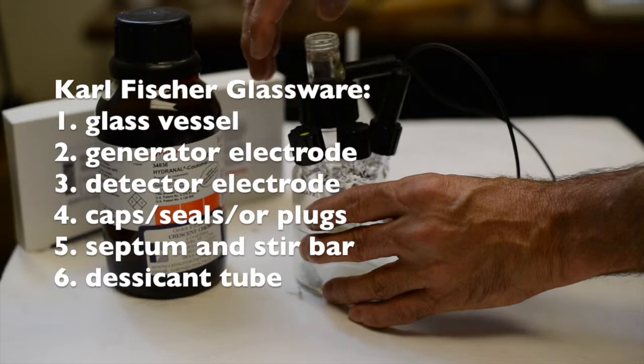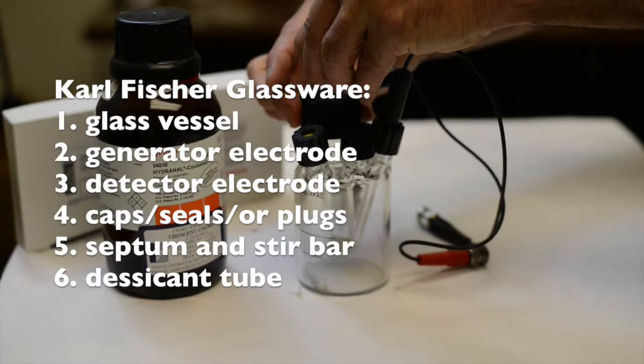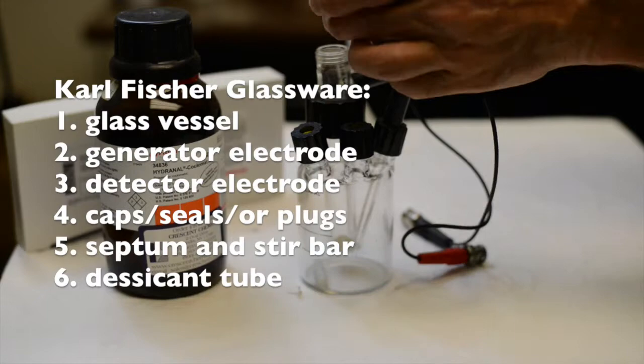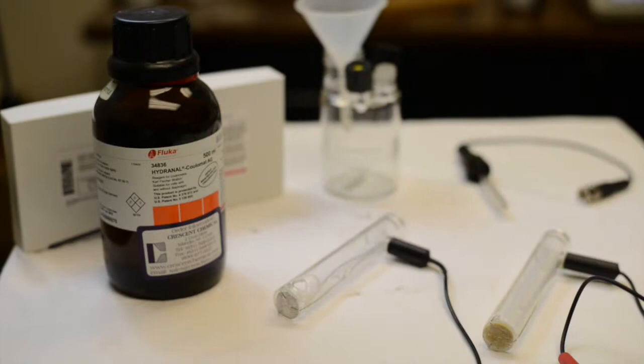Stir bars are placed in the bottom of the vessel and work in tandem with a magnetic stirrer to ensure that the sample and reagents mix sufficiently. And finally, desiccant tubes are used on various ports including the generator electrode to ensure moisture is kept out of the vessel.